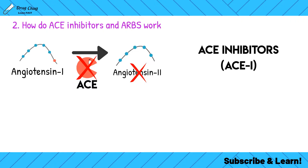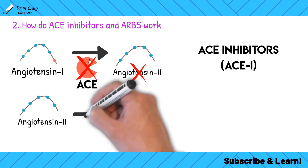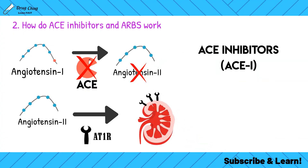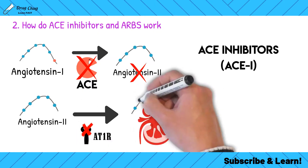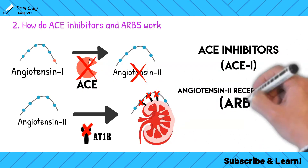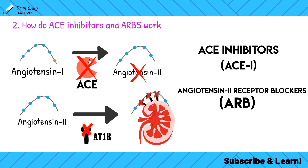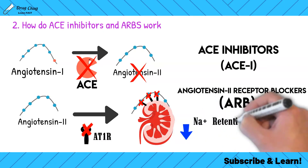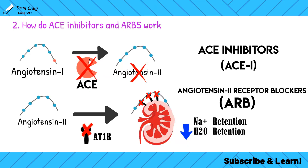Another drug target is the receptors on the kidney. Angiotensin 2 travels to the kidney and attaches to the AT1R receptor, causing that increase in sodium, water, and aldosterone. So it makes sense to block the AT1R receptors — and that's exactly what ARBs, angiotensin 2 receptor blockers, do. When we give an ACE inhibitor or ARB, it decreases sodium, decreases water retention, decreases aldosterone, and overall decreases blood pressure.